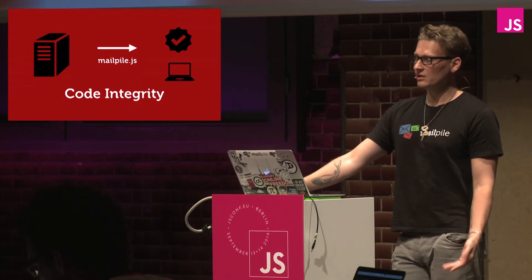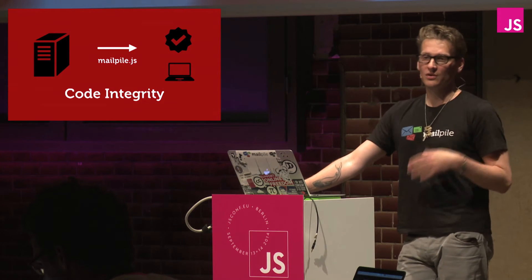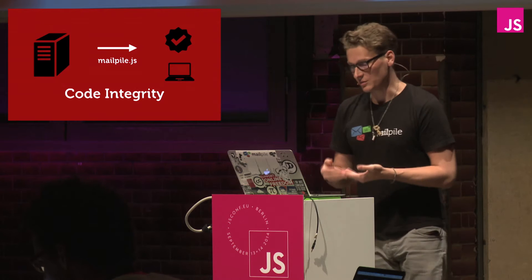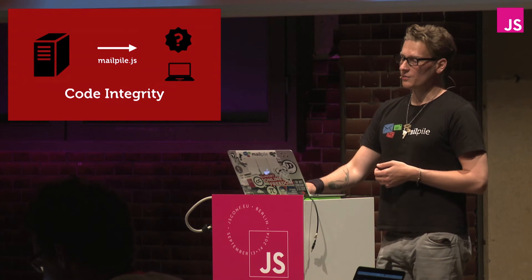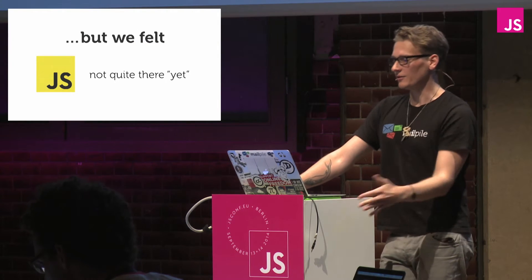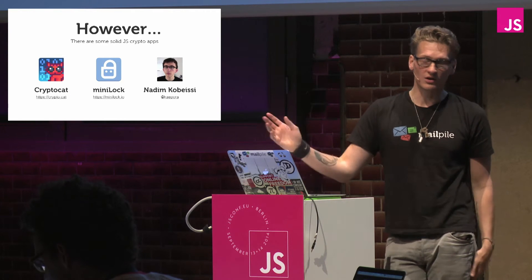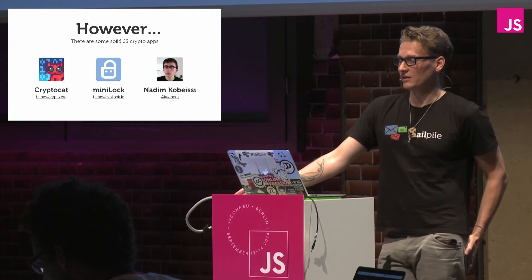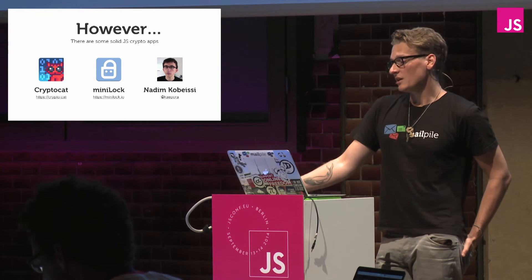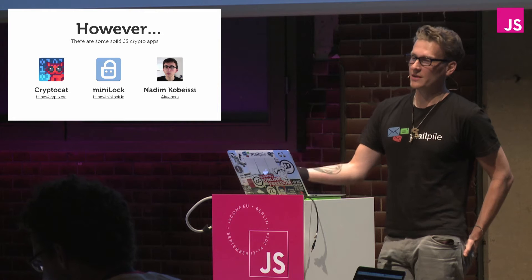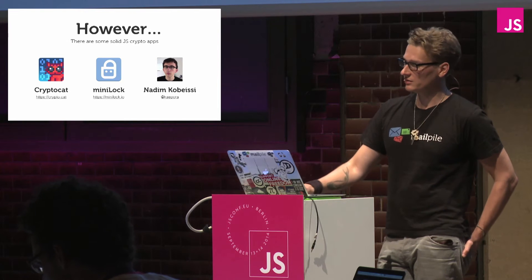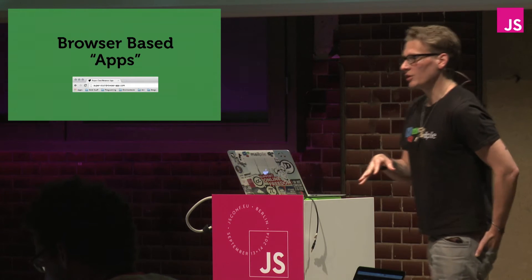Another big aspect is obviously code integrity. As JS files get downloaded from the server to your device, this could switch at any point — they could be hijacked and malicious code could be put in, and your keys and your communications would then be compromised. So all told, JS is getting there, but it's not quite there yet for our needs. However, there are some really solid JS crypto apps out there like Cryptocat and Minilock by Nadim. If you're really into that, you should follow along with him — Minilock is a file encryption app and Cryptocat is a chat app, and they're really great, getting audits by the security community.